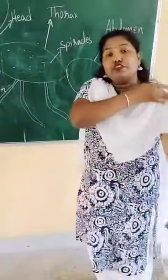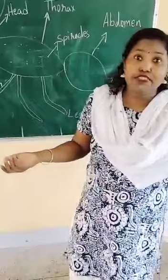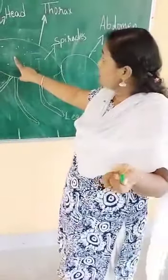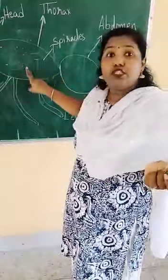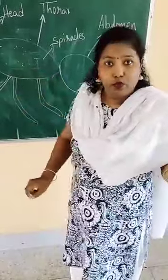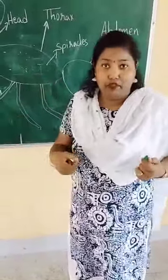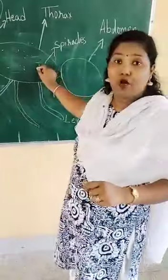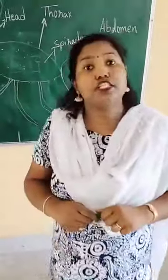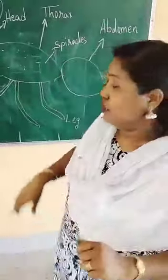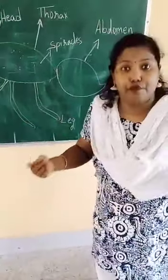We children breathe through our lungs. How do insects breathe? Insects have these small holes. These holes help them to breathe, and these holes are called spiracles. These holes help the insects to breathe.